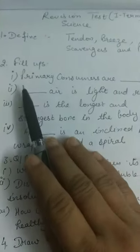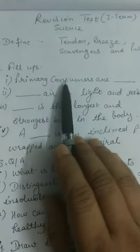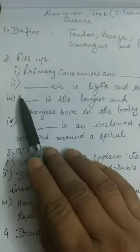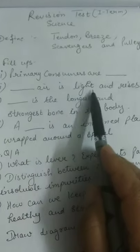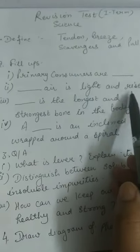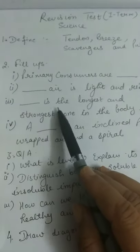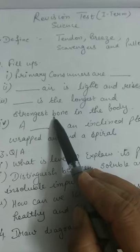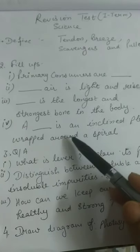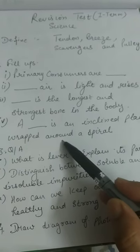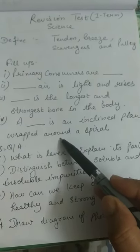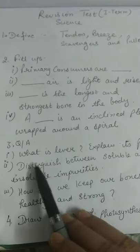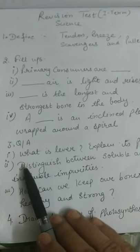Fill in the blanks: First — primary consumers are dash. Second — dash areas get warm and rise. Third — dash is the longest and strongest bone in the body. Fourth — a dash is an inclined plane wrapped around a spiral.